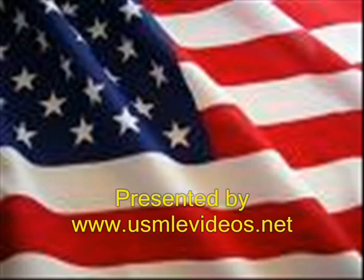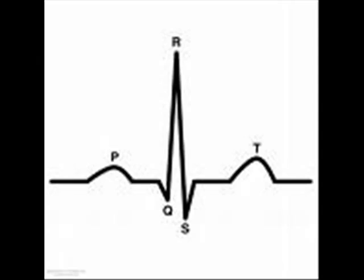Good evening. Let us review some most important EKGs today. EKG is mainly denoted by five important waves: P, Q, R, S, and T. P wave represents atrial depolarization, Q, R, S represents ventricular depolarization, and T wave represents ventricular repolarization.